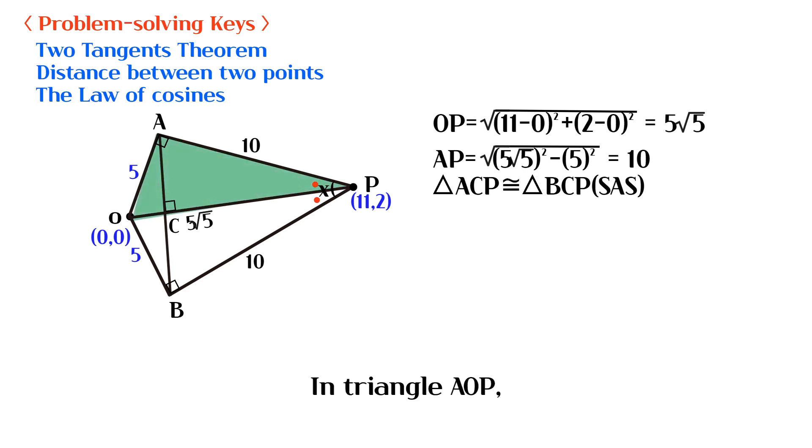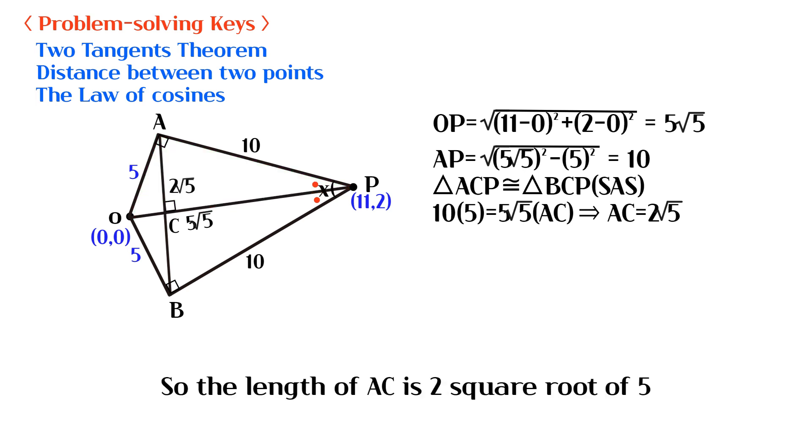In triangle AOP, the area of triangle AOP must be equal when the base is AP and when the base is OP. So the length of AC is 2 square root of 5.